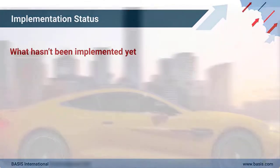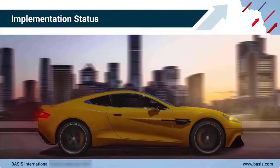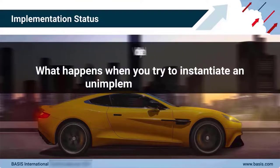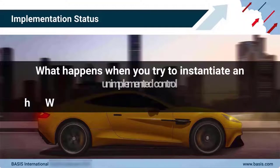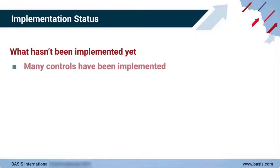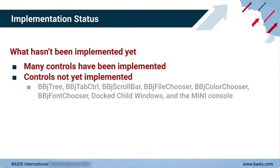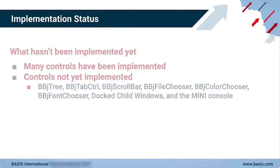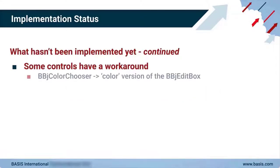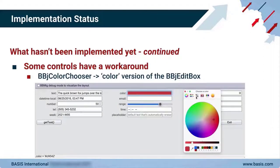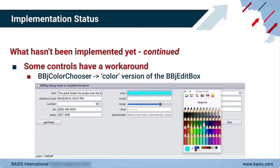Now that you have a better idea of what the DWC offers, let's cover which controls Basis has already implemented, what happens when you try to instantiate an unimplemented control, and which controls the DWC will not support. The list of implemented controls is pretty large, so it's probably easiest to cover which controls the DWC does not yet support, which includes the BBJ tree, BBJ tab control, BBJ scroll bar, BBJ file chooser, BBJ color chooser, BBJ font chooser, dock child windows, and the mini console.